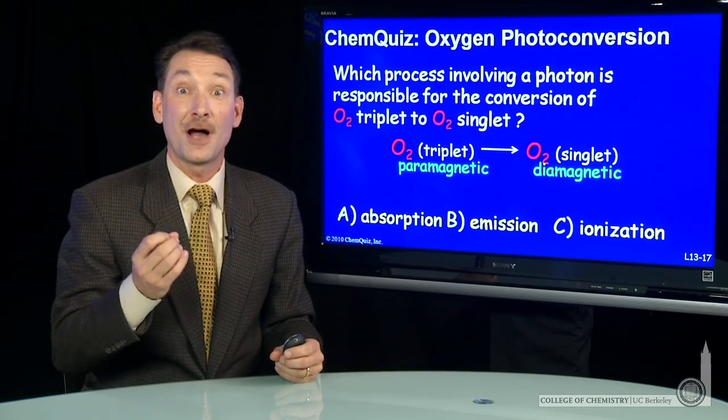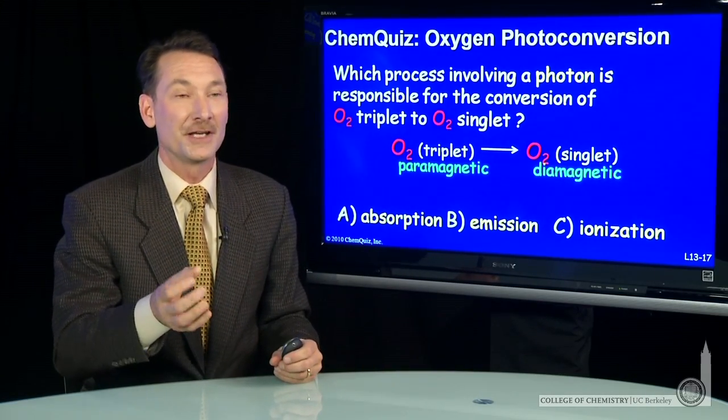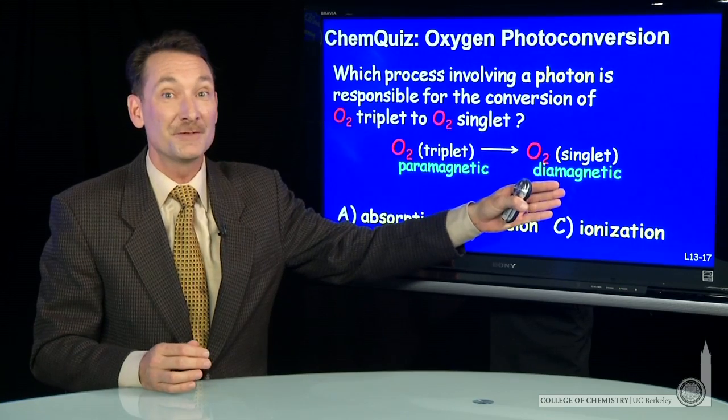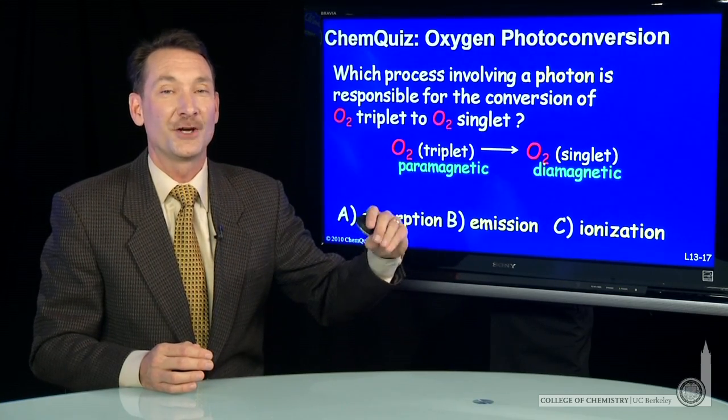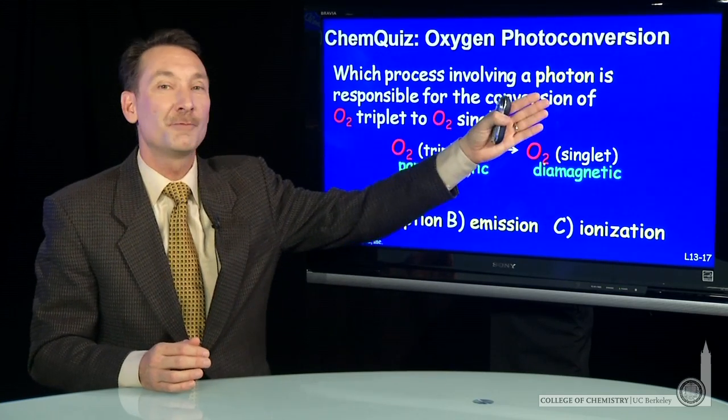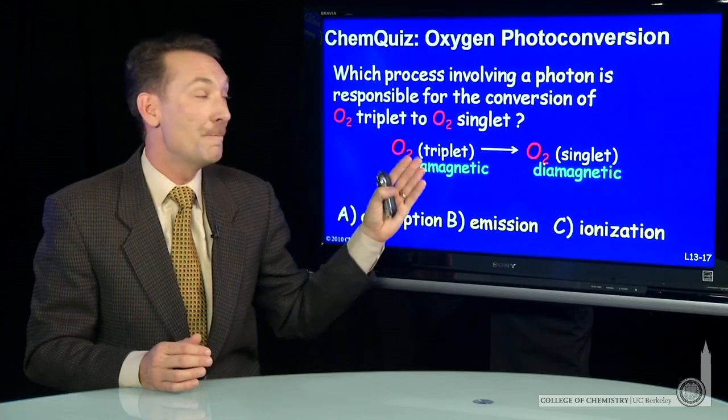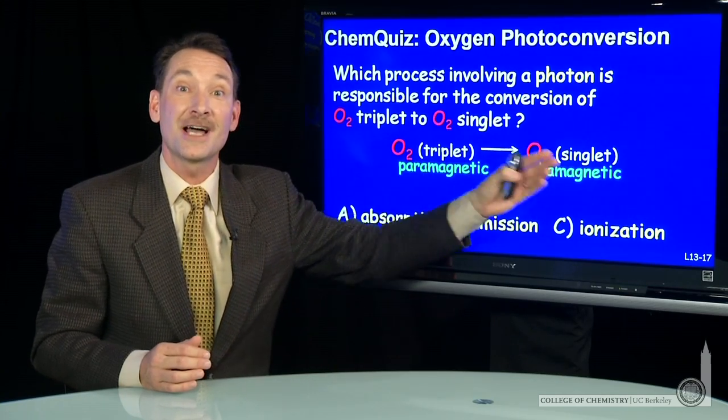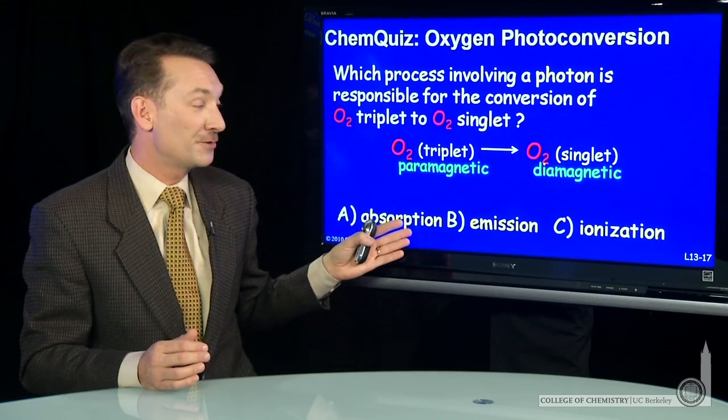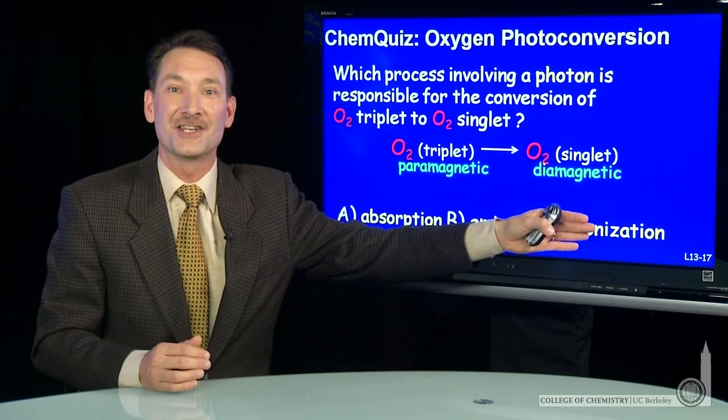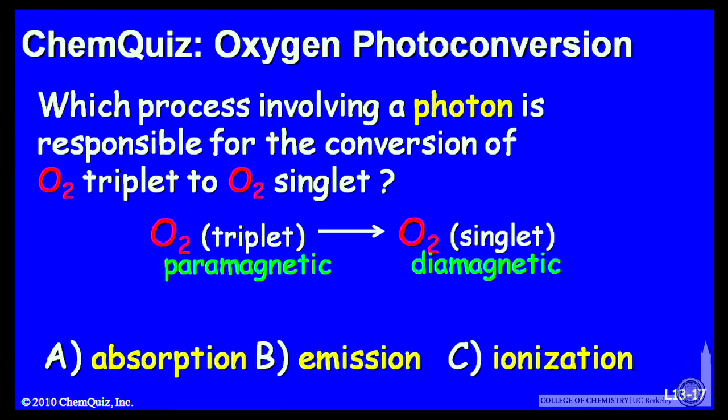Let's look at molecular oxygen. Molecular oxygen is paramagnetic, but it can undergo a transition where it becomes diamagnetic. The question I have for you is, which process involving a photon makes paramagnetic oxygen into diamagnetic oxygen? Is it an absorption, an emission, or an ionization? Think about that and make a selection.